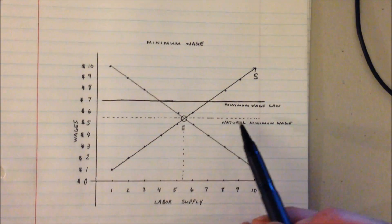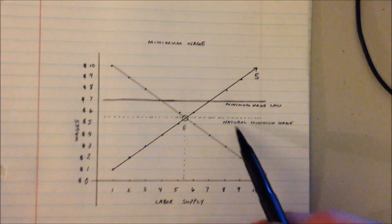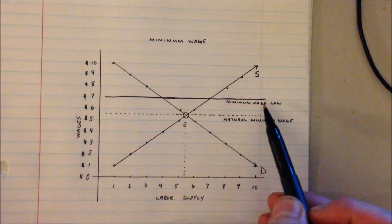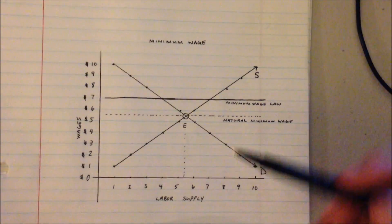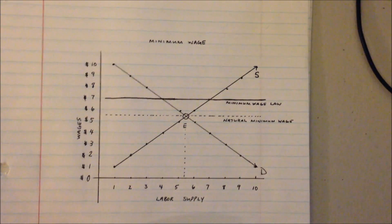But let's say for whatever reason our society decides to impose a higher minimum wage than the natural minimum wage. And so in our model let's just pretend that that becomes $7. So now that we have this new minimum wage, what are the effects of that minimum wage?